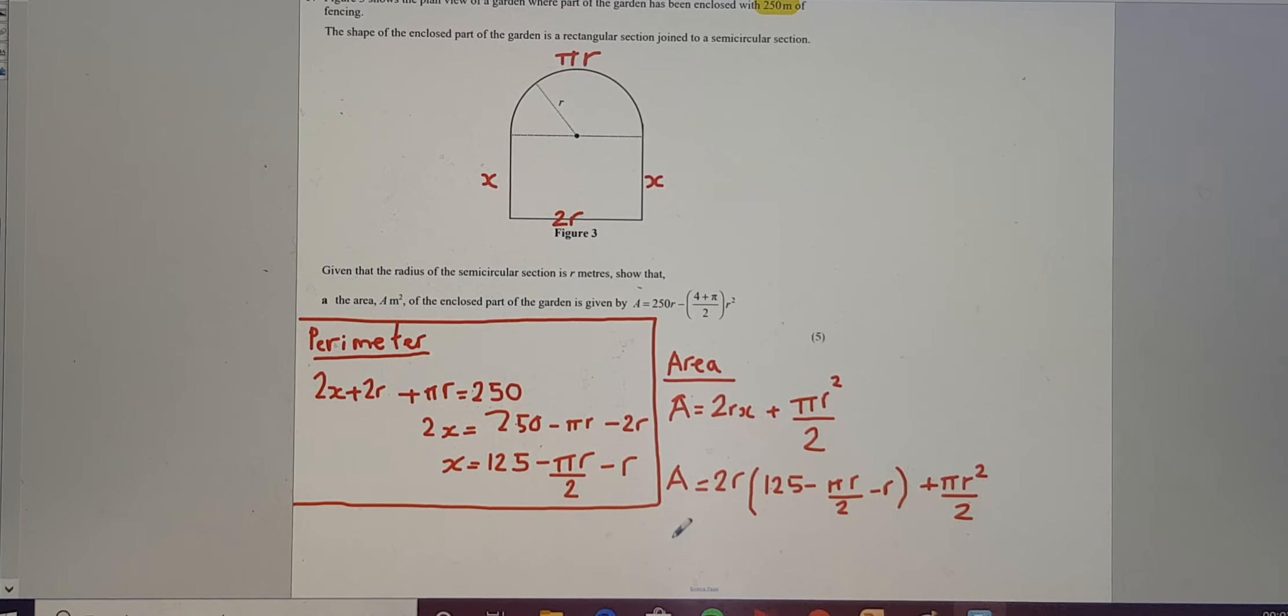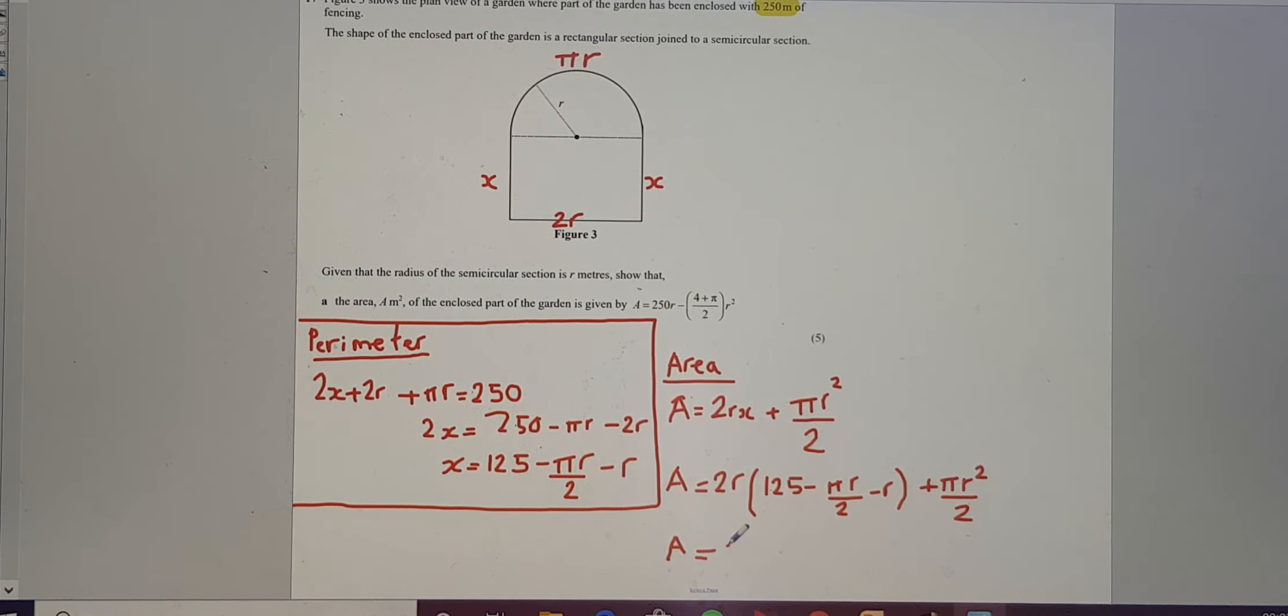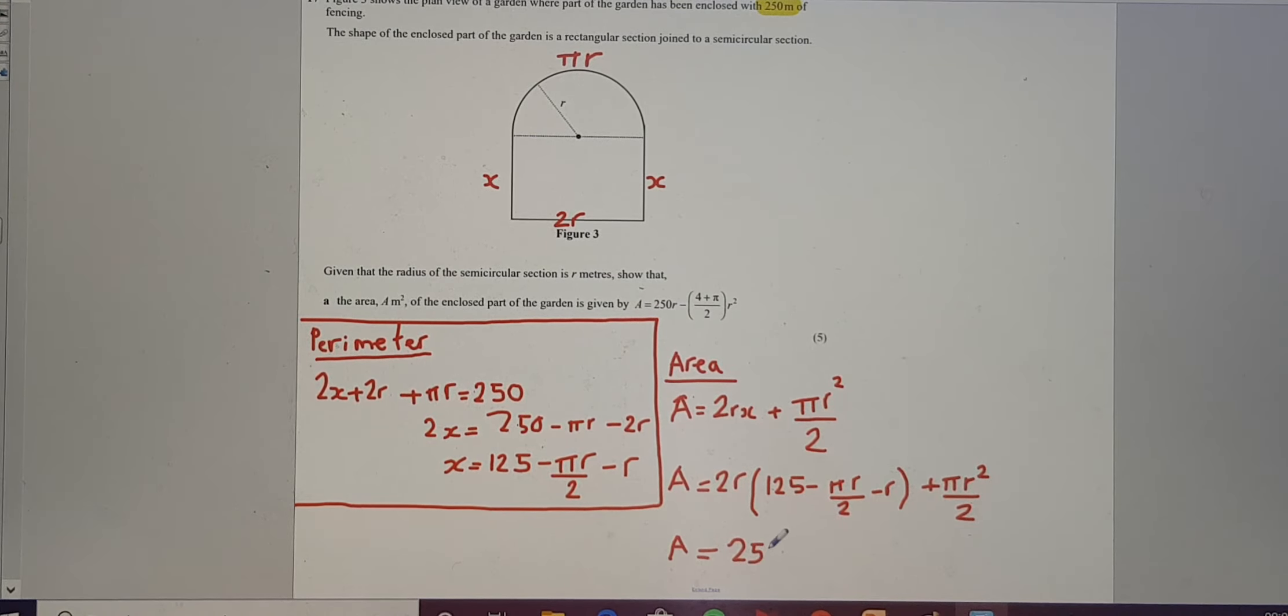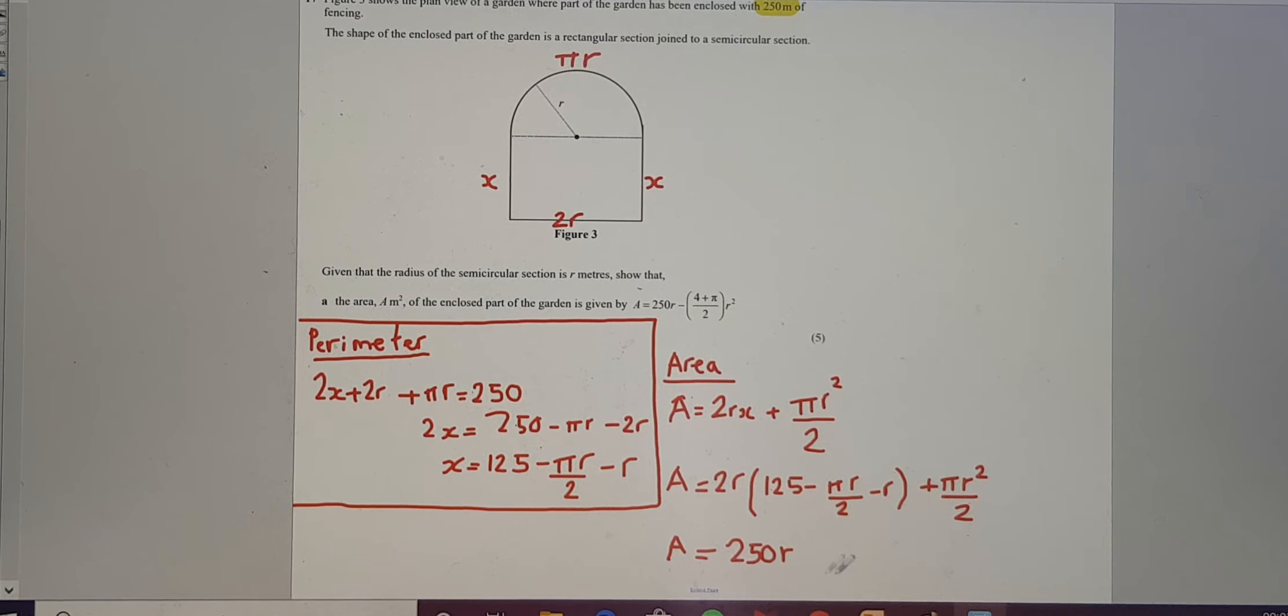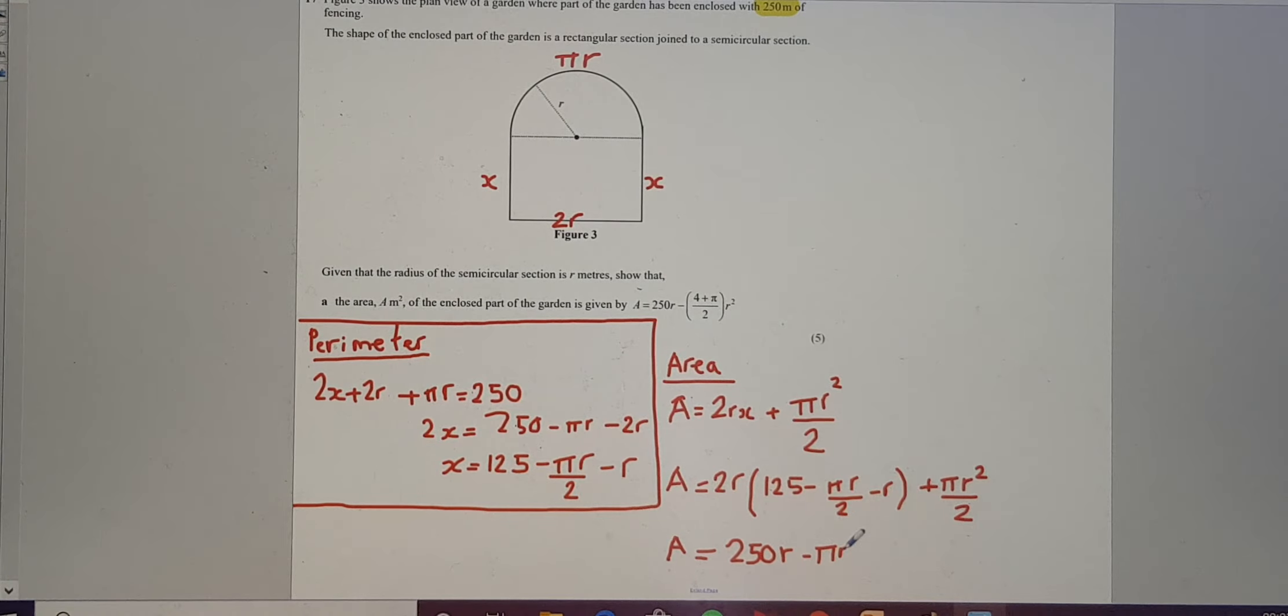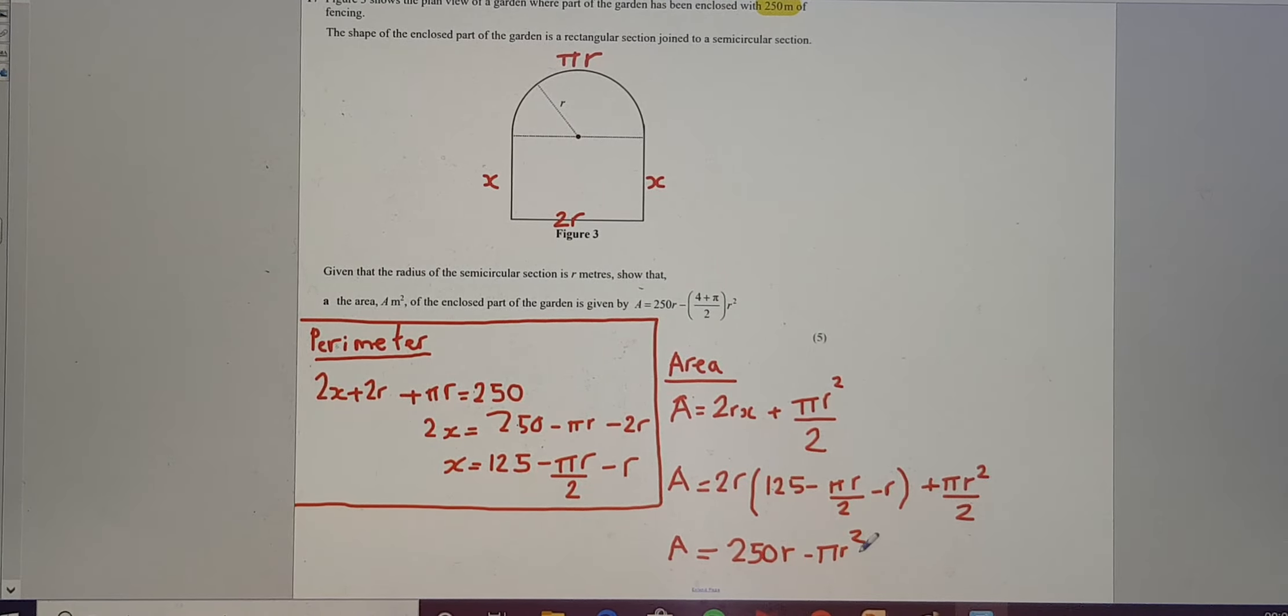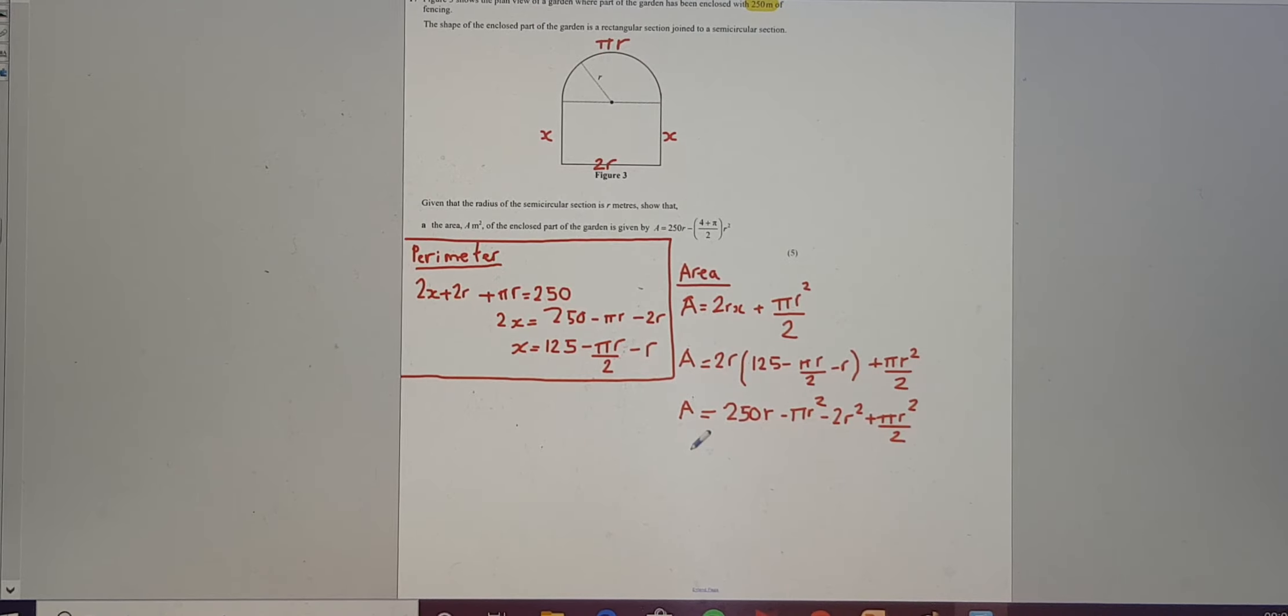So let's expand that. We're going to get a equals 2r times 125 is 250r. 2r times pi r over 2 is going to give me, so the 2 and the 2 are going to cancel. Just going to give me minus pi r squared. 2r times minus r is minus 2r squared. And then this is not involved in the bracket, so I'm just going to write this out again as pi r squared over 2.